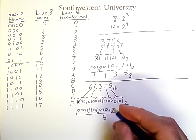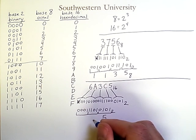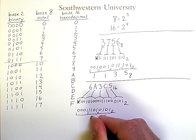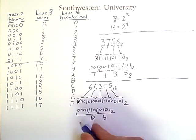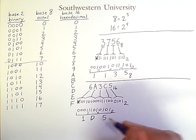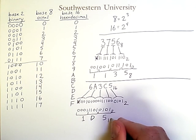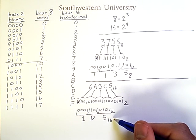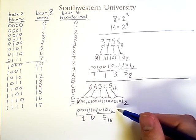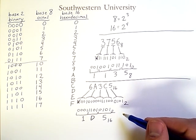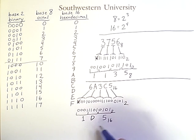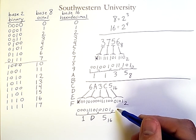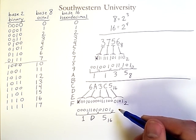This group is 5. This group is D. And this group is 1. This is in base 16 or hexadecimal, so this is the hexadecimal equivalent of this binary number. Hopefully you can see that hexadecimal provides a clear and direct mapping to binary numbers that is, however, much more compact. This is why it is often used in computer science.